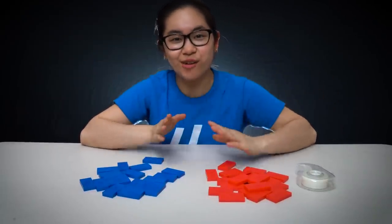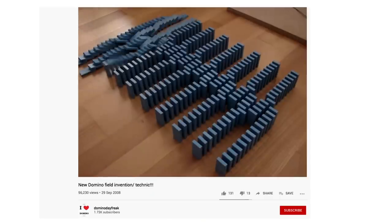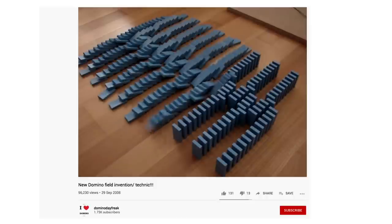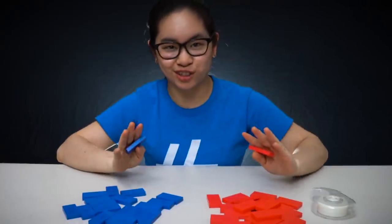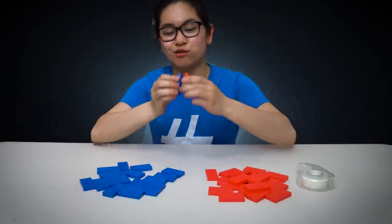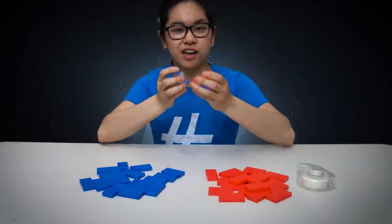It dates all the way back to 2008. I believe it was first seen by Domino Day Freak on YouTube and it's a super useful trick. The tape hinge trick allows you to switch a direction 180 degrees, so you have a domino line going one way, tape hinge goes, and then it goes in the opposite direction.